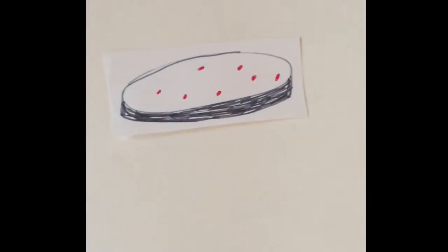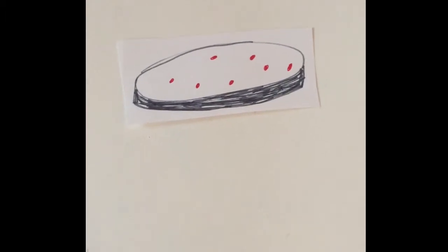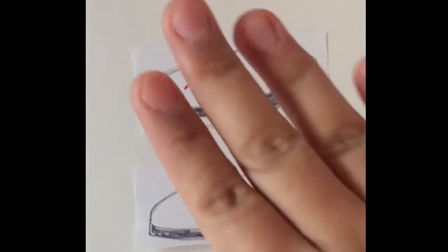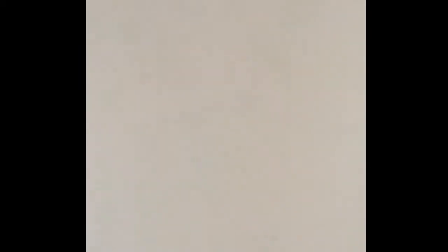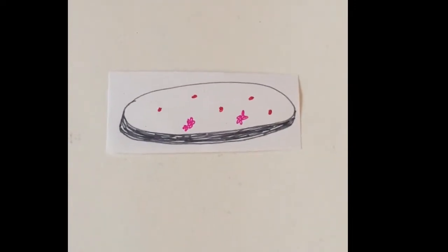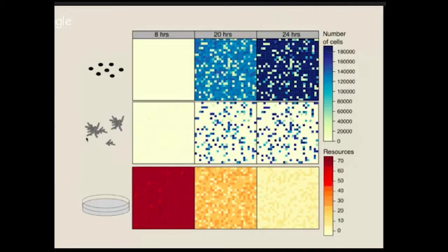Using the model system of yeast was really helpful in understanding how multicellularity in these simple organisms could arise. Multicellular cells and unicellular yeast cells have the same growth rate, but what really limits their growth is the amount of resources available to them. In Maria's study, she plates both multicellular and unicellular cells onto one plate and records their growth over time.